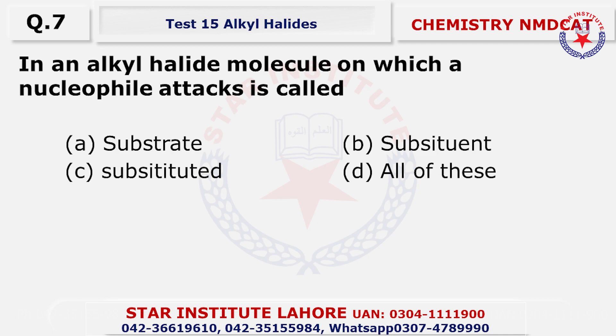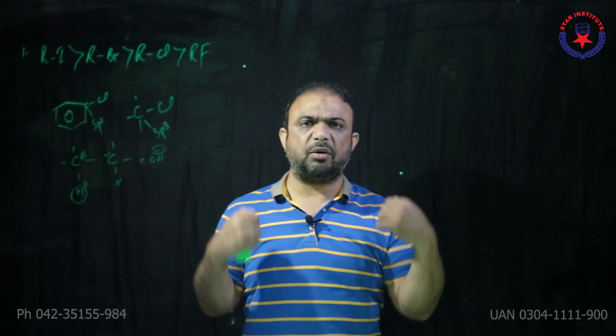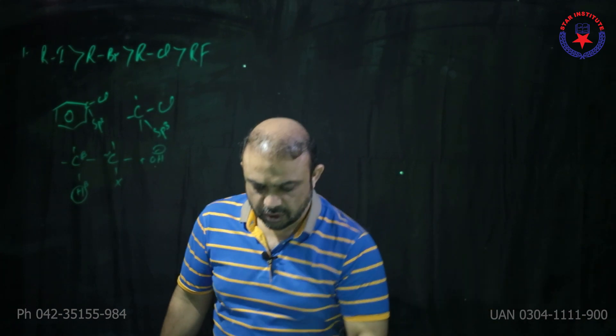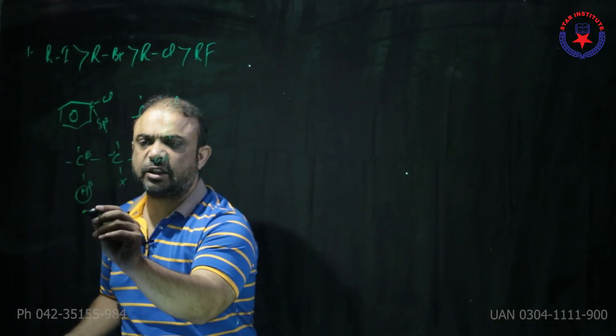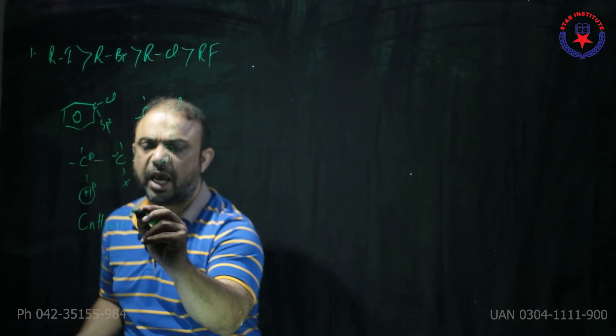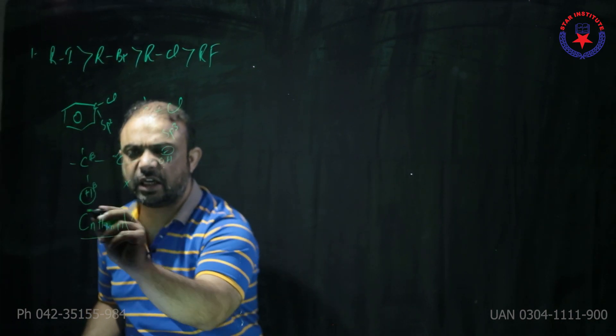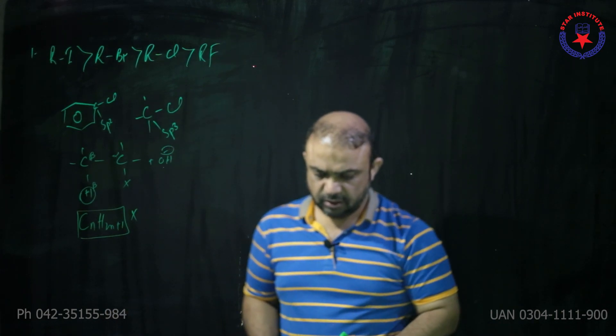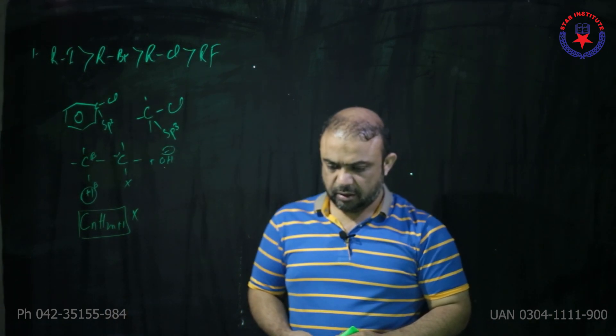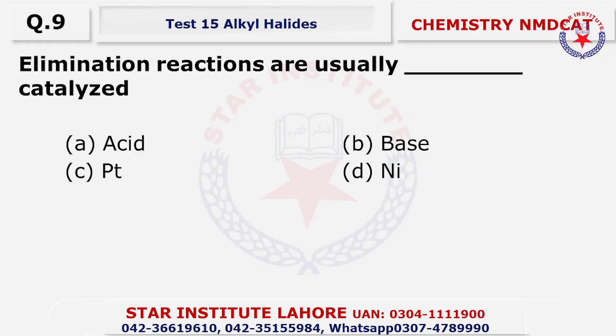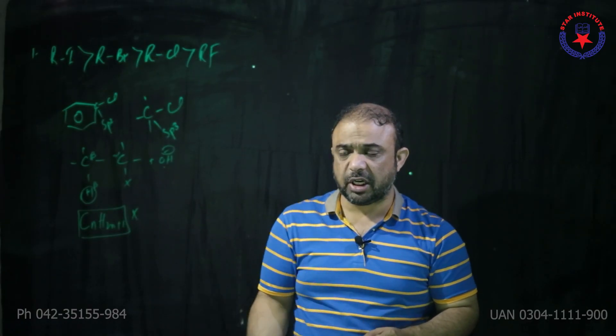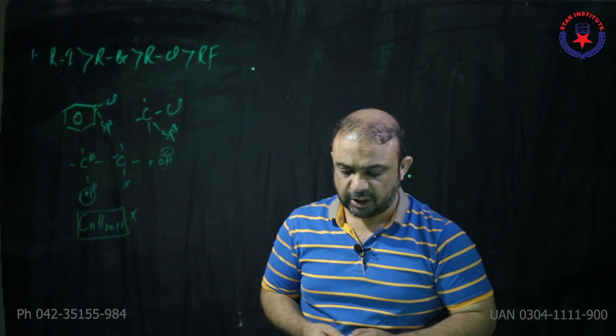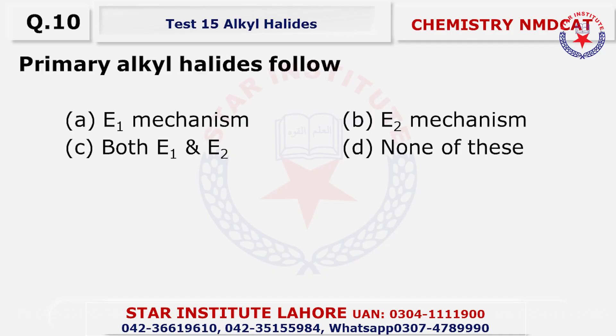Question number seven, alkyl halide molecule on which a nucleophile attacks toh jis par attack ho raha hai woh substrate kahlaye ga choice is alpha. Question number eight in alkyl halides R group cannot be aromatic. Kyunke alkyl halides ka jo formula hai woh hai CnH2n+1X toh yeh justify nahi karta aromatic part ko. Question number nine elimination reactions are usually base catalyzed. Ise E1E2 elimination ya alpha beta elimination kahein ge kyunke yeh beta hydrogen ke removal ki authority rakhta hai.